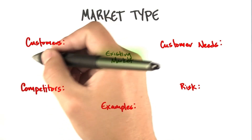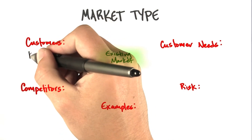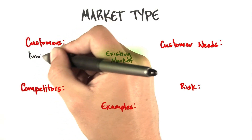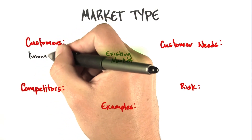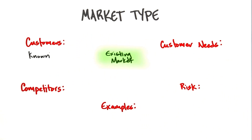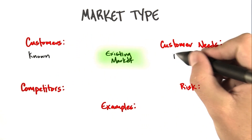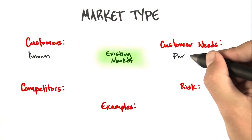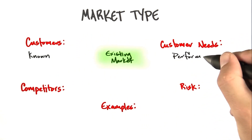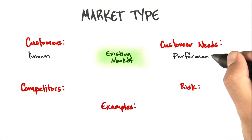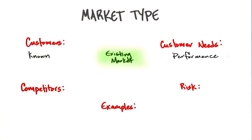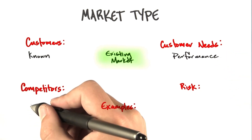Existing market. The customers are known — we know who they are, they exist. The customer needs, well, we could ask them: what do they really care about for gains and pains? They could tell us.